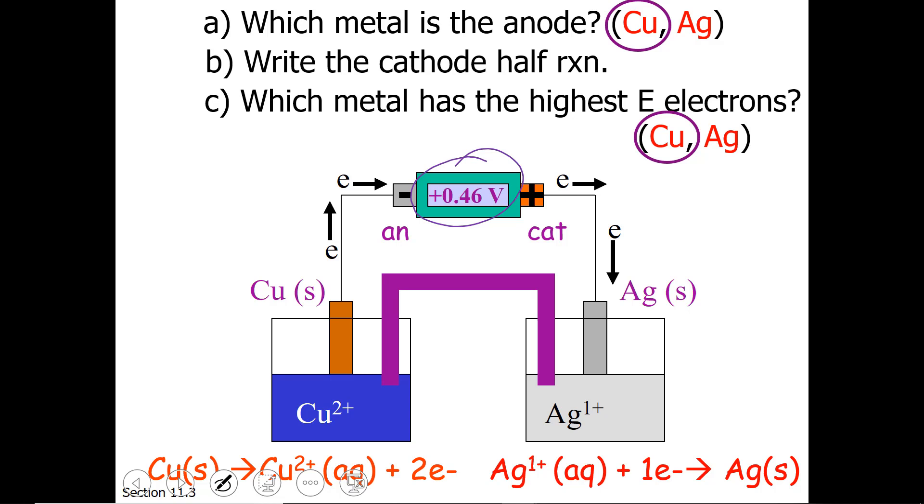One thing to note about this example versus the previous one: in the previous example with iron and copper, copper was our cathode. Silver has a more positive reduction potential, so in this second example, copper has been our anode.